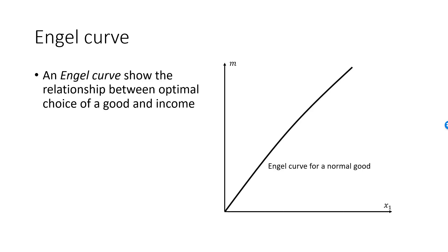The Engel curve will slope upwards if the good is normal, and it will slope downwards if the good is inferior. Normal goods are further categorized into luxury goods and necessary goods.